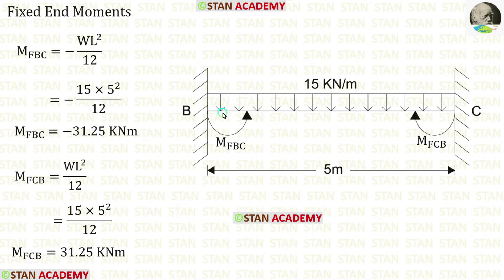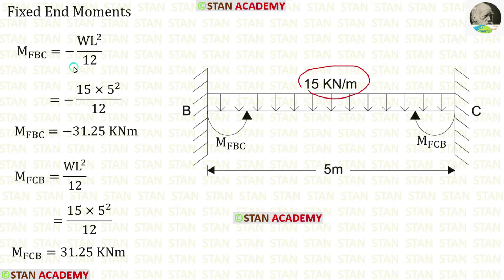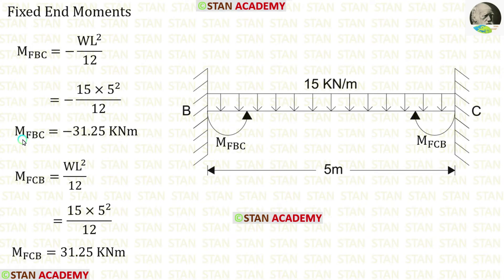Now let us take beam BC. A UDL of 15 kilo Newtons per meter is acting over the full span. The formulas for fixed end moments are minus WL² over 12 and plus WL² over 12. Using these formulas we can find the fixed end moments M_BC and M_CB.